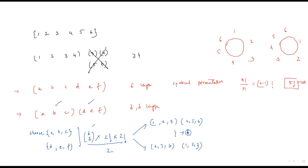So the count for two 3-length cycles is 20 × 2 × 2 / 2 = 40. Adding both cases: 120 + 40 = 160. So 160 is the total number of such permutations. It's a beautiful problem!